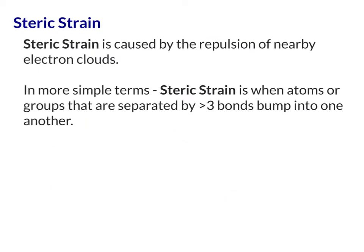The next type of strain is steric strain, caused by the repulsion of nearby electron clouds. This is a much more broad type of strain than torsional strain. In the simplest terms, steric strain occurs when an atom or group of atoms separated by more than three bonds bumps into one another. One of the first places we saw this, although we didn't define it at the time, was in the gauche conformation of butane, where having two methyl groups close to one another raises the energy of the molecule.